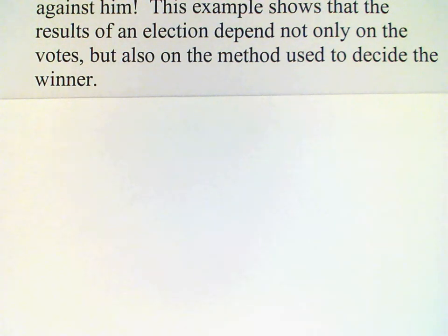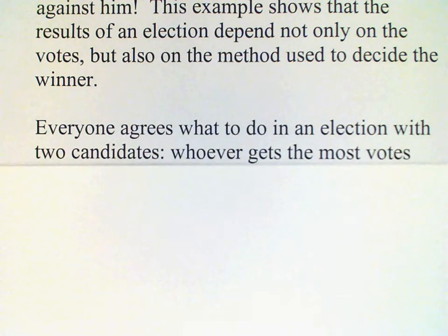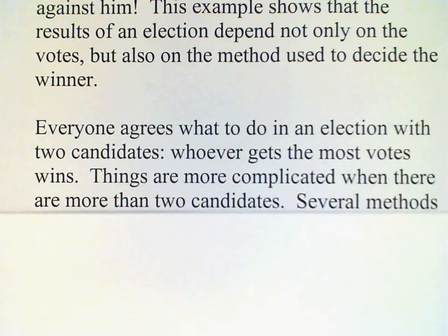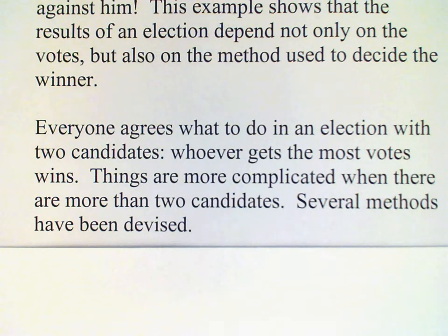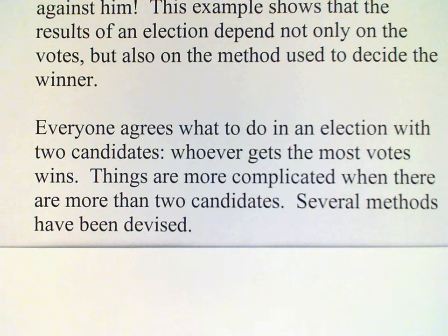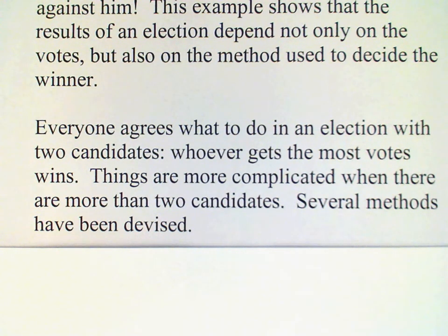This shows that the results of an election can depend not only on the votes that are cast, but also on the method that is used to decide the winner. It is clear that when we have only two candidates, everyone agrees what needs to be done — namely, whoever gets the most votes will win. Where we have a problem is when there are more than two candidates. Several methods have been devised and are in use, and that's what I want to tell you about right now.